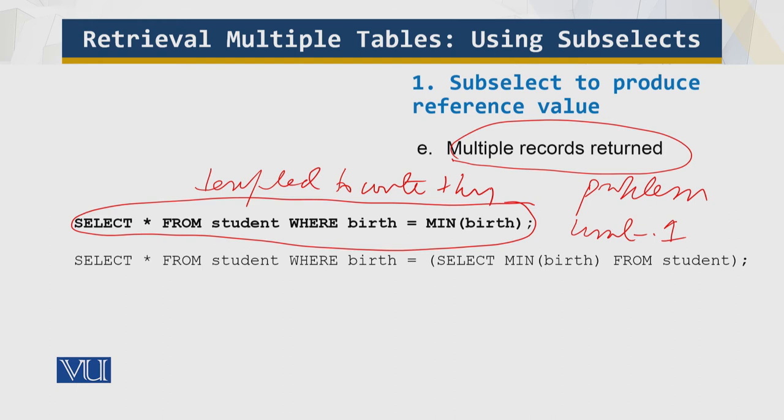However, you can use a subselect to produce the minimum birth date as follows. You can use this subselect, and now you will get the answer. This is the outer one. Now it's going to work. This is the power of the subselect, which is not obvious until you actually run the query and come across the issue.